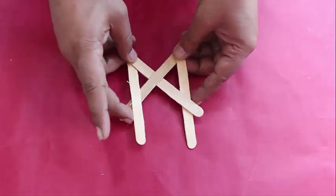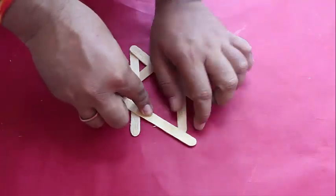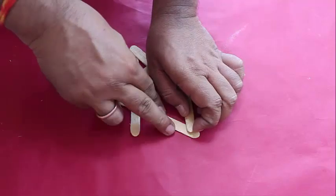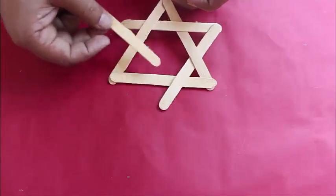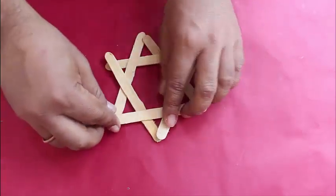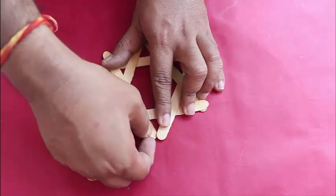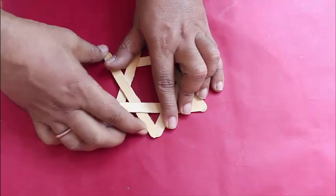Once again, place two pairs of sticks in a V form as shown. Both should be in the same orientation. With the help of two more sticks, make an interlocked hexagram. A hexagram is a six-pointed star. Weave sticks such that they interlock and stay put without any glue.